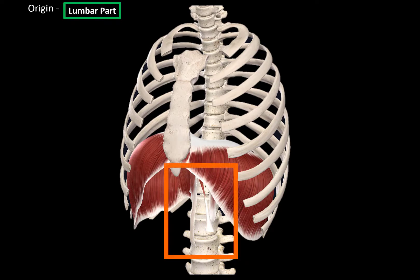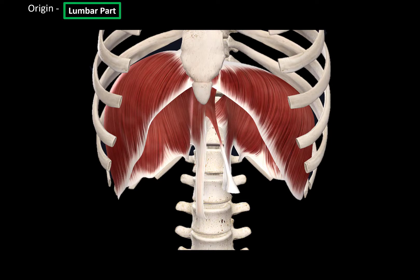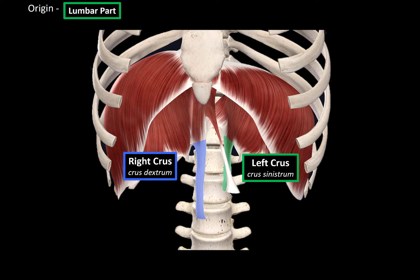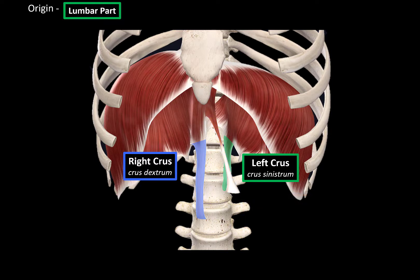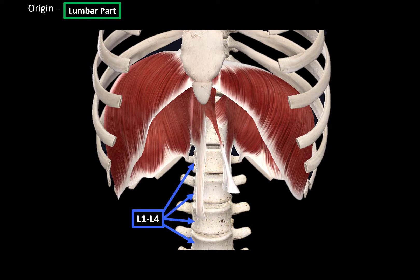The lumbar attachment of the diaphragm is from this area. The main thing you can see looking at the lumbar part of the diaphragm are two muscular fibers going down along the vertebral column, called the right crus and the left crus. The right crus is longer than the left crus. Don't get confused by the long structure here — it's called the suspensory muscle of the duodenum, which grabs the duodenum to keep a certain part of it flexed; it is not part of the lumbar origin. The right crus attaches at the vertebral bodies of L1 to L4, and the left crus attaches at the vertebral bodies of L1 to L3.